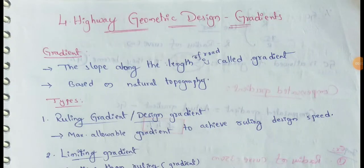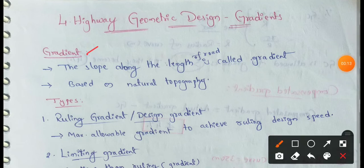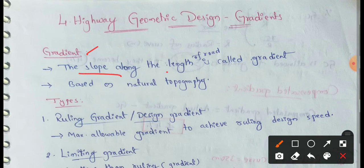Next topic: highway geometric design. In geometric design, we discuss gradient. So what is gradient? Gradient is the rate of rise or fall along the length of the road with respect to horizontal. Our road's length, taking horizontal as base, whether the road rises or falls — that is the gradient. Simple: slope along the length of road is called as gradient. Taking the length of the road as base, whatever slope is there, that is called gradient.